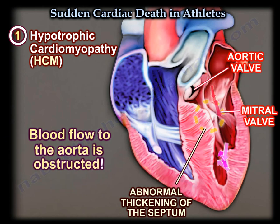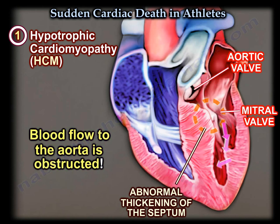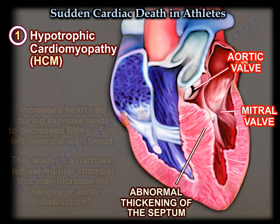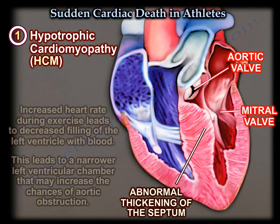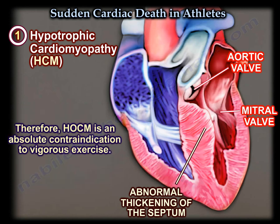As we can see in this image, the mitral valve leaflet has come in contact with the abnormal septum leading to obstruction of blood going to the aorta. Increased heart rate during exercise leads to decreased filling of the left ventricle with blood, resulting in a narrower left ventricular chamber that may increase the chances of aortic obstruction. Therefore, hypertrophic cardiomyopathy is an absolute contraindication to vigorous exercise.